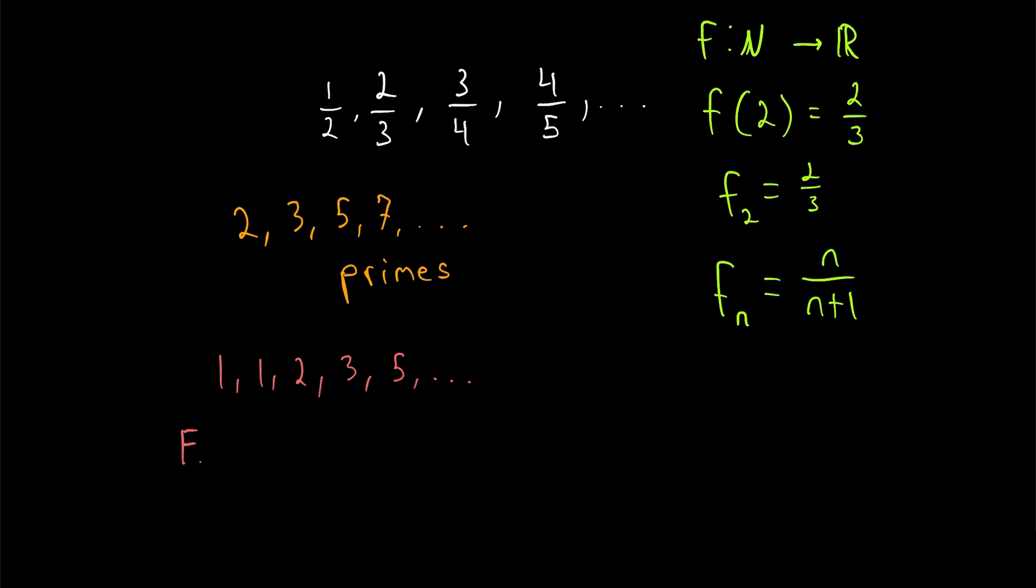For this sequence, the first term is equal to one, and the second term is equal to one as well. But every other term in the sequence is equal to the sum of the previous two terms. So, for all n greater than two, for all terms after the second term, Fn is equal to Fn minus one, the previous term, plus Fn minus two, the previous previous term. For example, five is equal to two plus three.